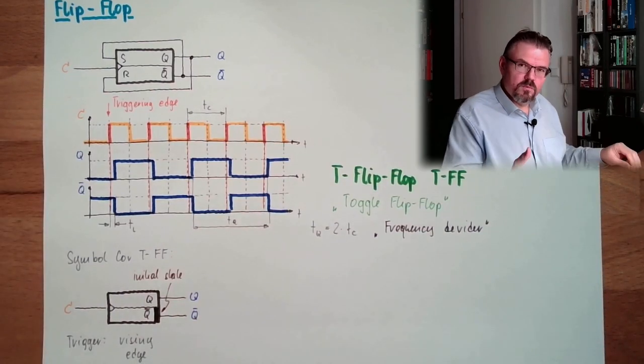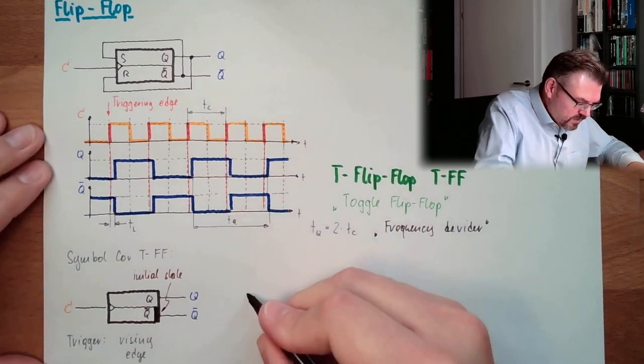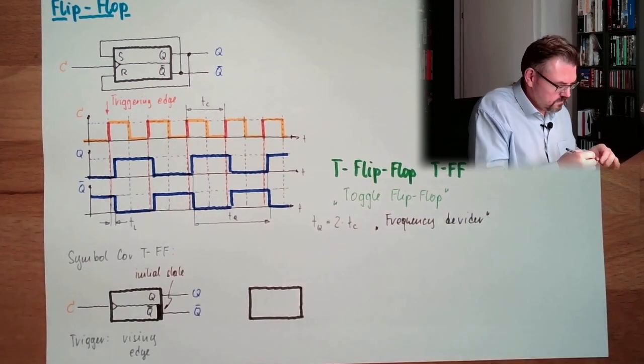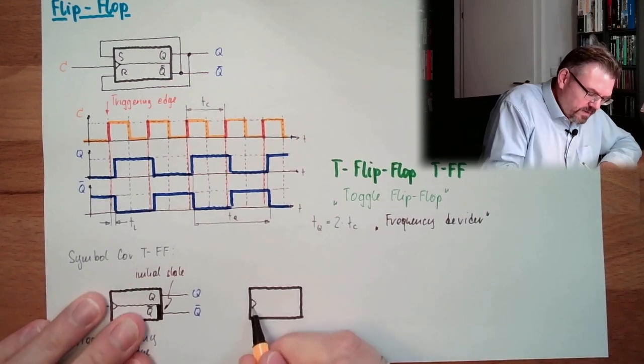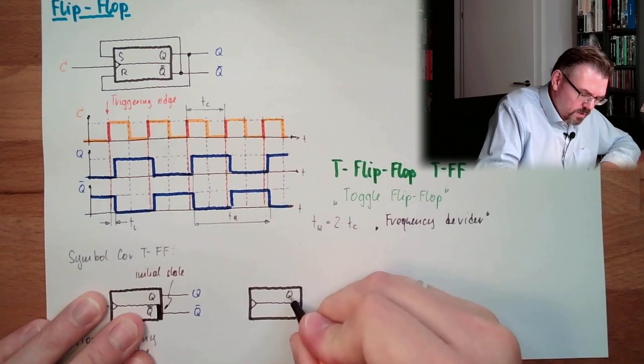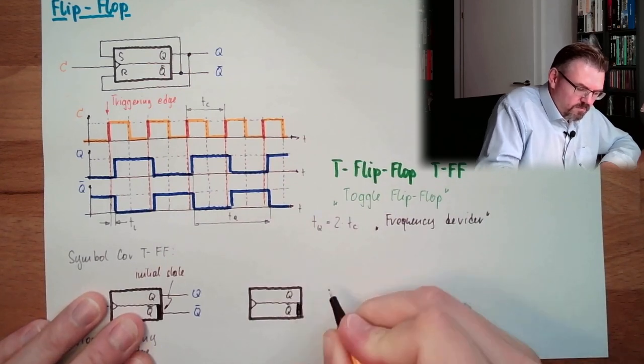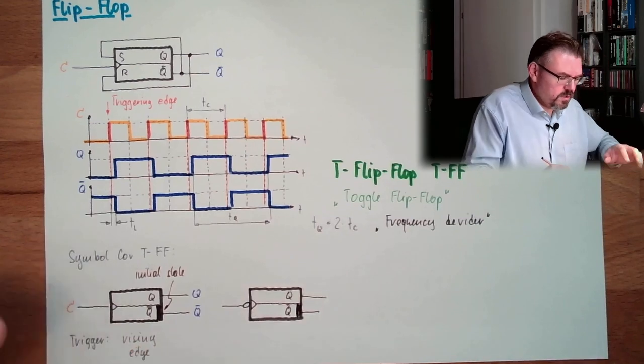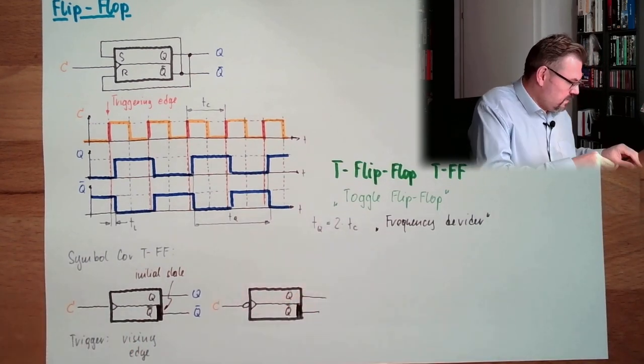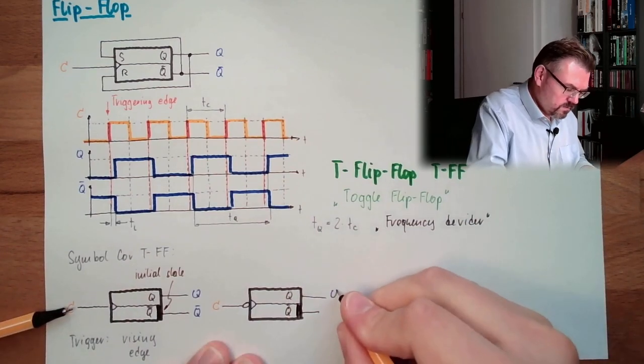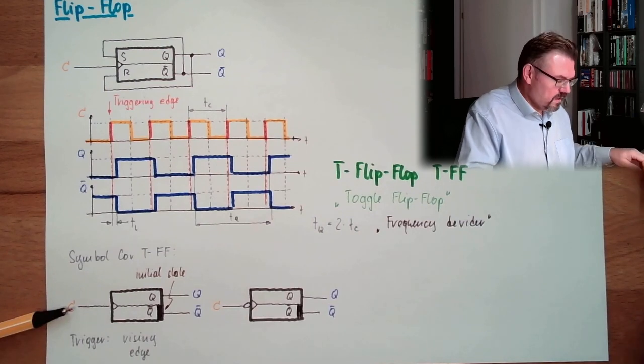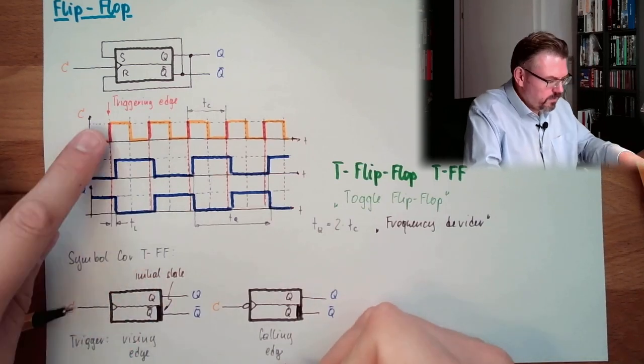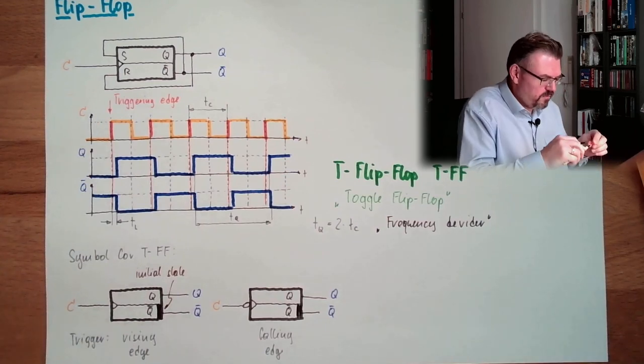There would also be the possibility to be triggered by the falling edge. Then the symbol looks a little bit different, but pretty much the same. So here the base symbol is the same. We have, of course, again here this trigger input. We have again this q and not q. We have again the initial value. We have again the outputs, of course. And here we have a not. This is the only difference. Then we have here C, and here we have again q and not q. This is triggered by falling edge. Then we would not trigger here, but here. But the working principle is the same.